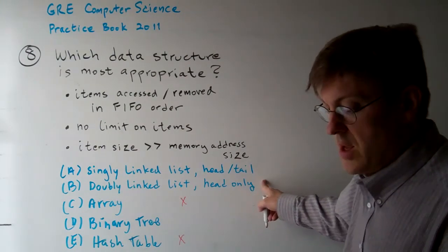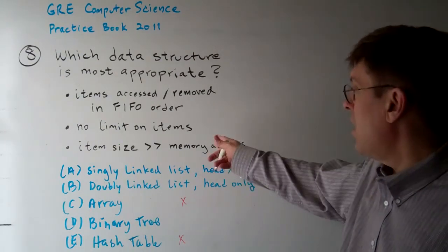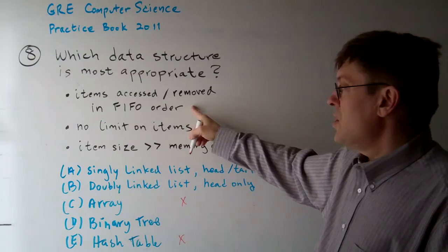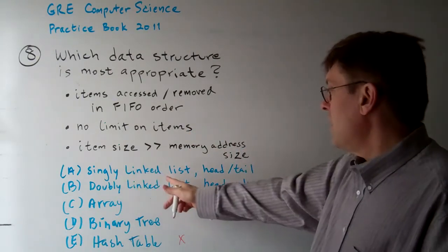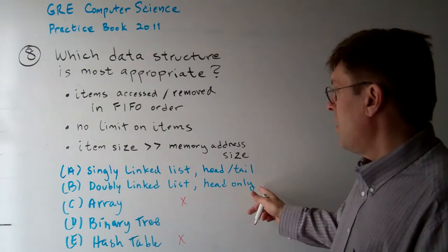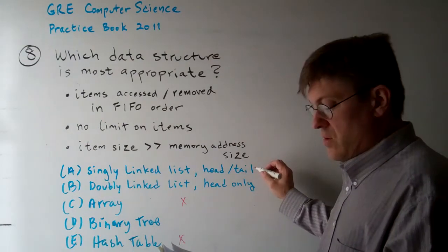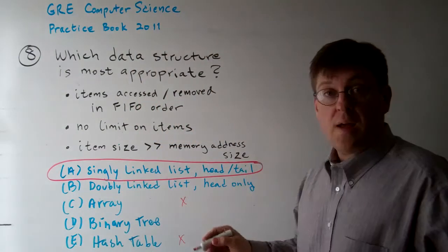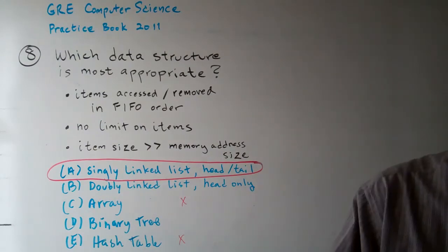So the linked list is clearly what we're looking for. The size of an item is large relative to the memory address, so having those pointers on a linked list is not too bad. Since it's a first-in, first-out solution, you're starting at the first item and going to the end — a singly linked list is a good solution. There's no need for a doubly linked list because you're not going backwards. So the answer to Question 8 is A.